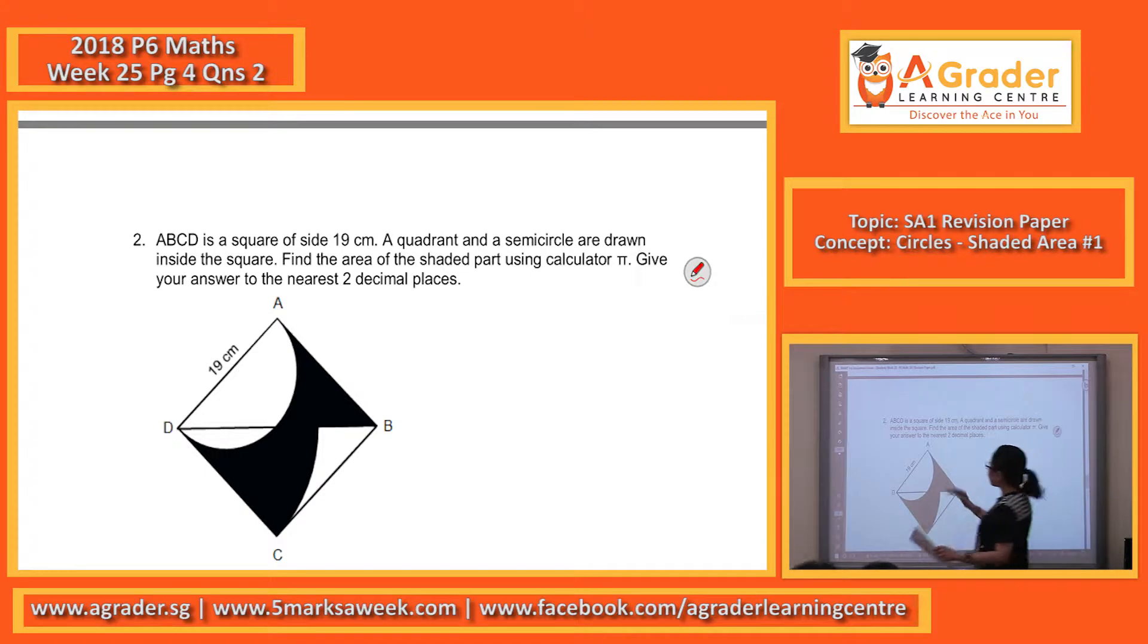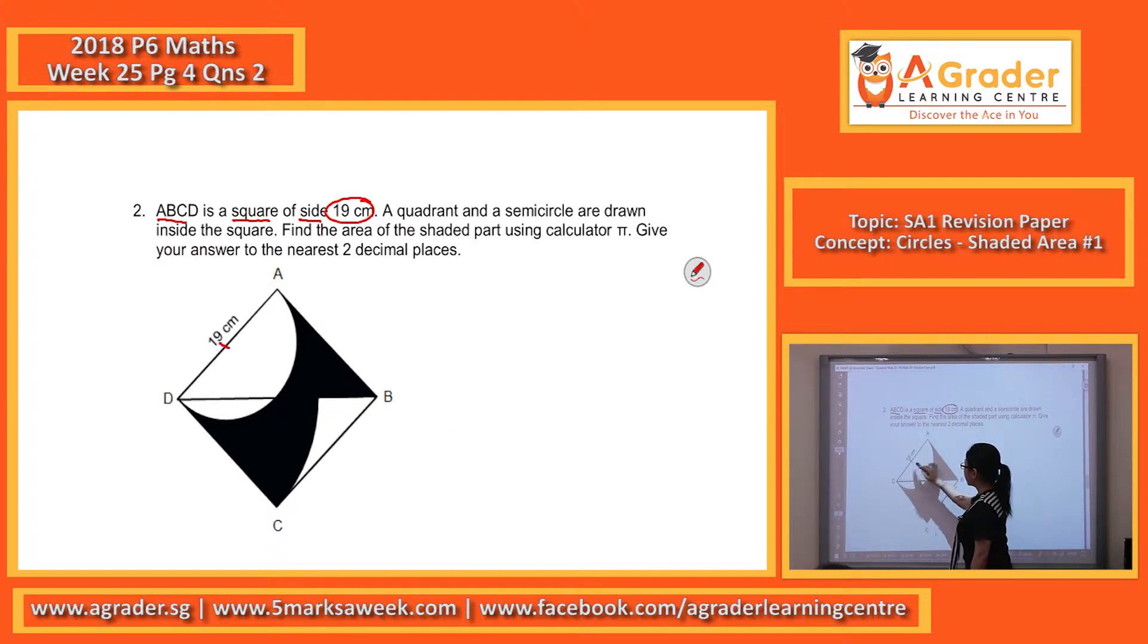ABCD is a square of side 19 cm. If that is a square, put in symbols, equal lines. So the 19 - besides the side of the square is 19, what else does the 19 represent?